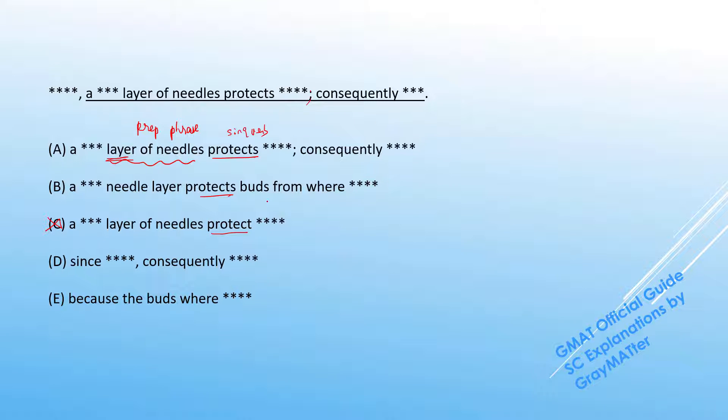Now B and E have a common mistake. B says birds from where and E says birds where. The relative pronoun where is used to refer to place, and birds is obviously not a place. If you notice in D it says birds which. That can work because the relative pronoun which is used to refer to plants, animals, and things. So B and E can be eliminated.